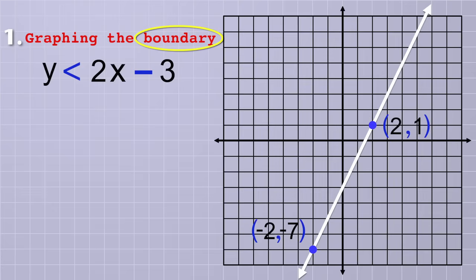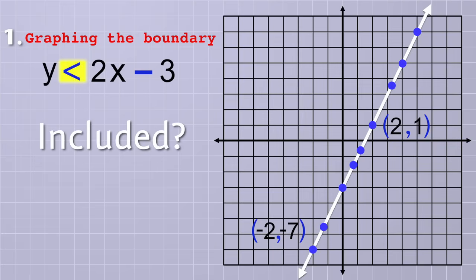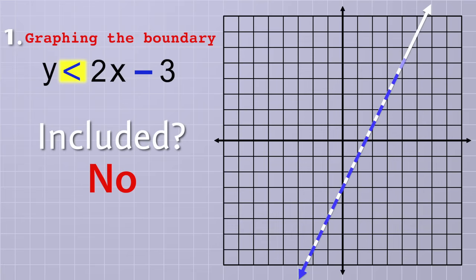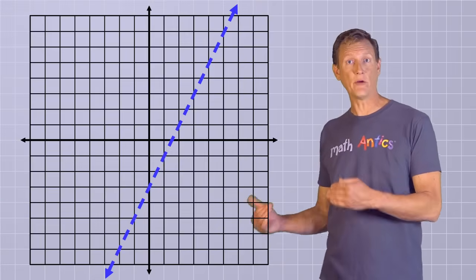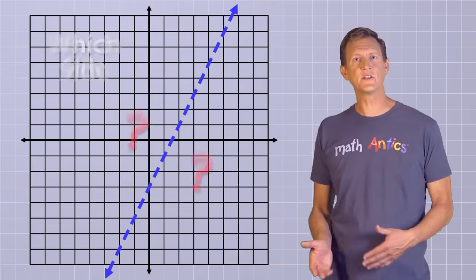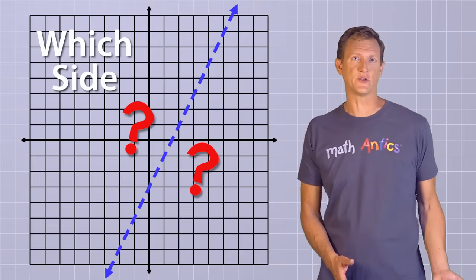But are the points exactly along that line included in the solution set? To answer that, we need to check the inequality sign of the original problem. In this case, since we have the less than sign that does not include the equal sign, the line itself won't be included in the set of valid answers, so we'll draw it with a dashed line instead of a solid line.